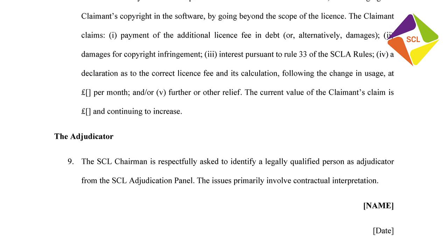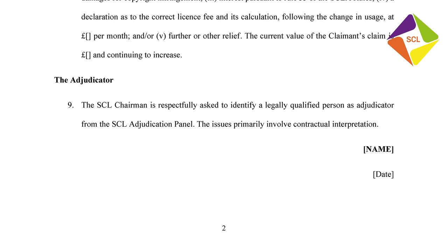Turning to paragraph nine of the dispute notice, in accordance with Rule 3.5, we have the claimant communicating to the SCL chairman who would be appropriate to resolve this dispute. Here, a legally qualified person would be appropriate, but for a more technical dispute you could specify a non-legally qualified person as adjudicator. Stepping back, this is a long-term contractual relationship that my client would very much like to preserve, and the hope through adjudication is to get a quick decision on a contentious issue that will hopefully settle the area of dispute and allow the contractual relationship to be reset.